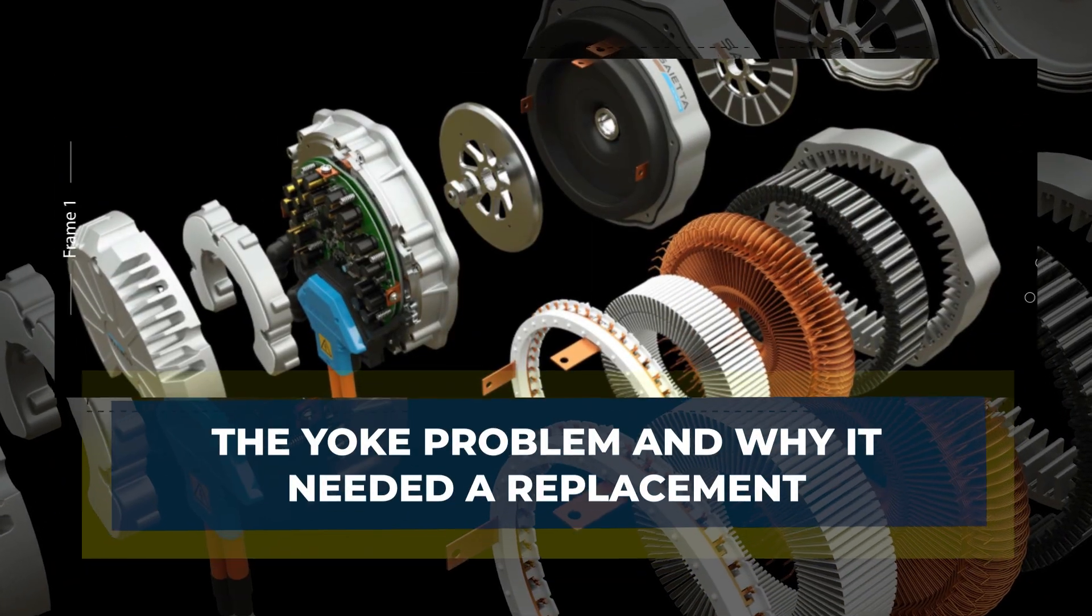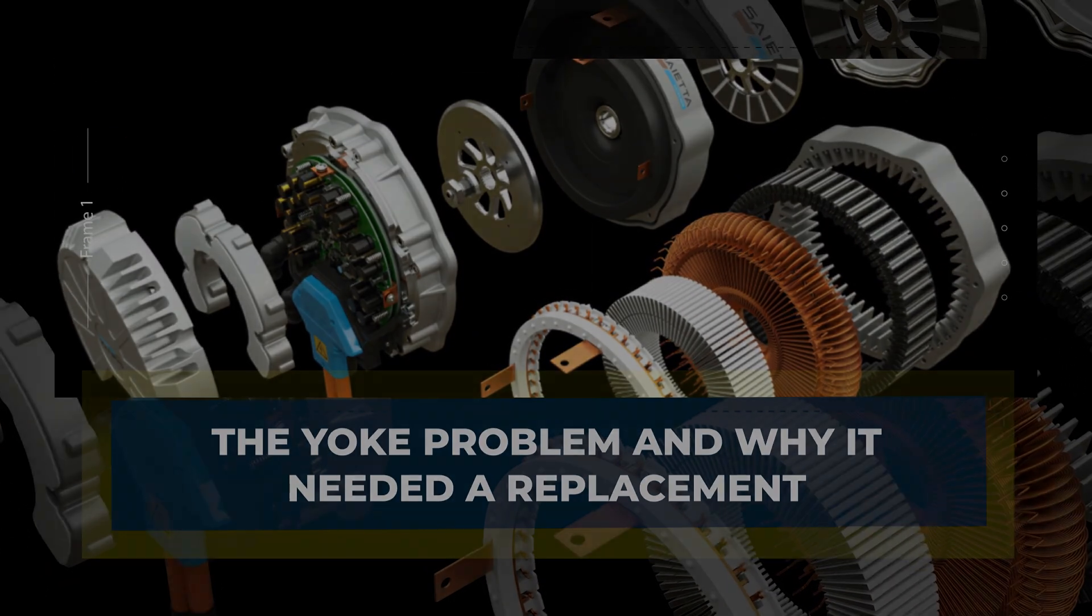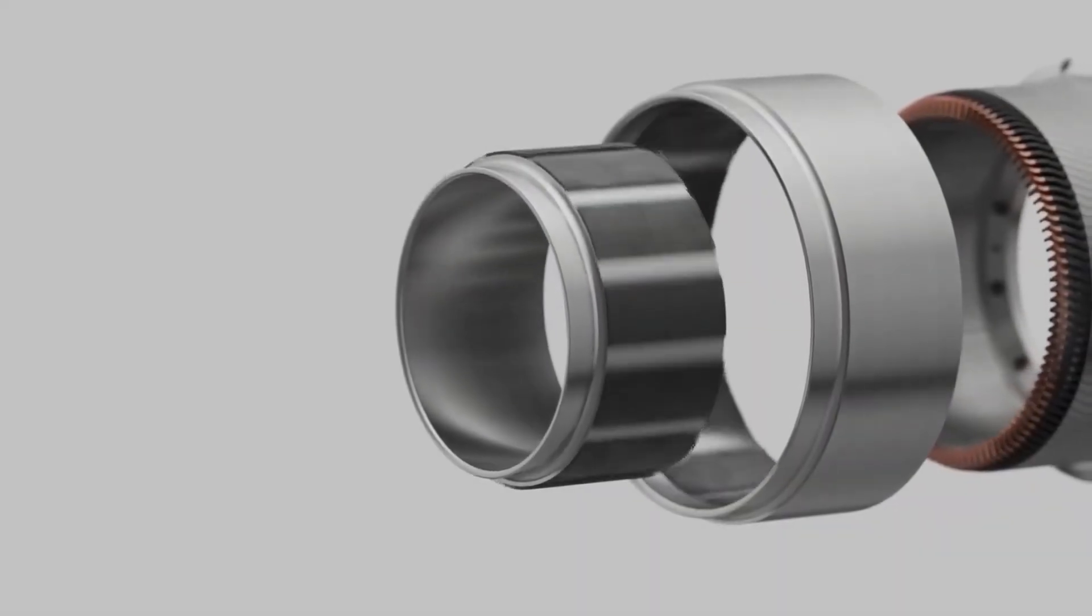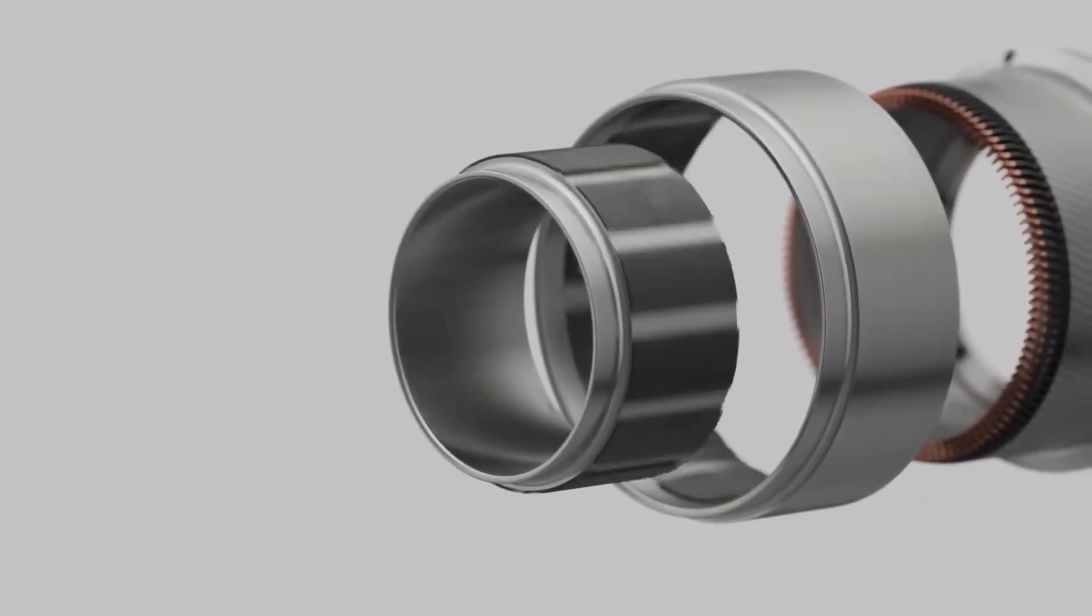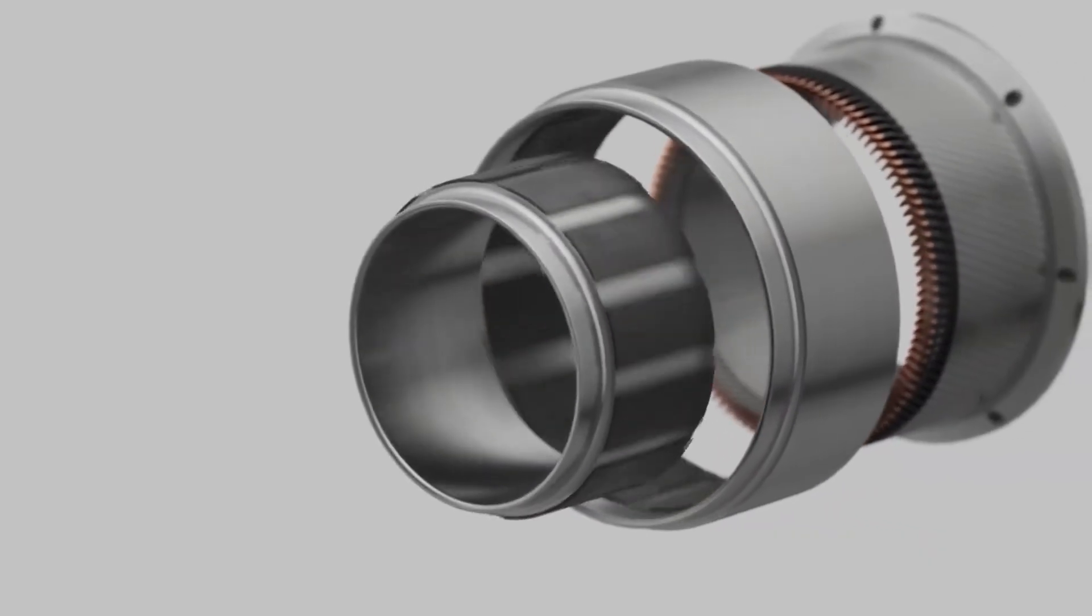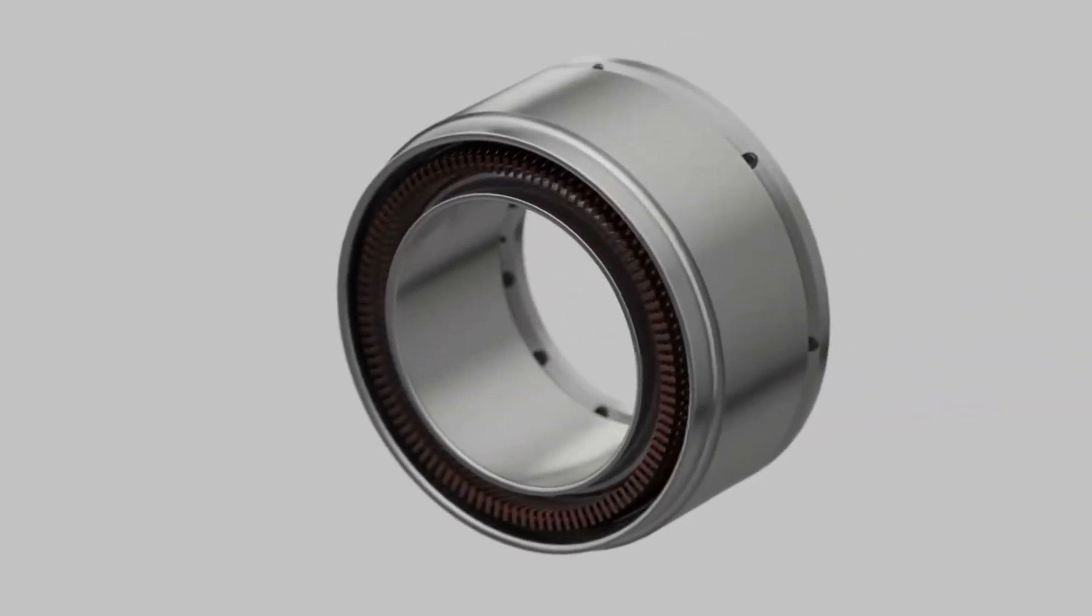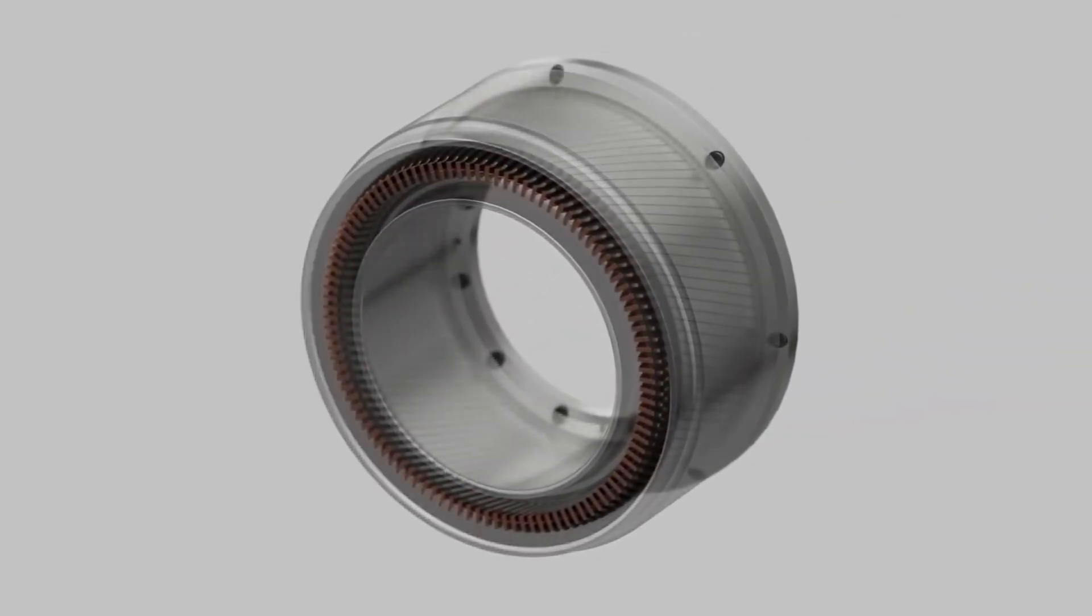When engineers talk about the yoke, they do not usually speak with much excitement. It is a passive ring of metal and does not produce any torque. But it is very important. Without it, the stator teeth could move under magnetic pressure, and the copper windings could get dangerously hot.